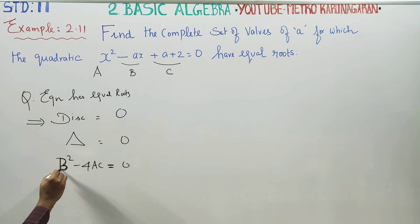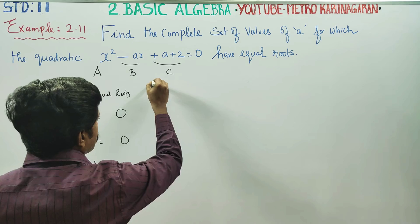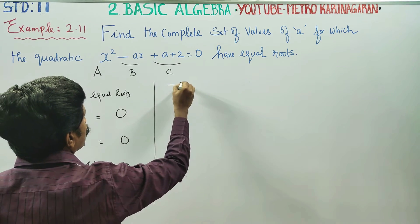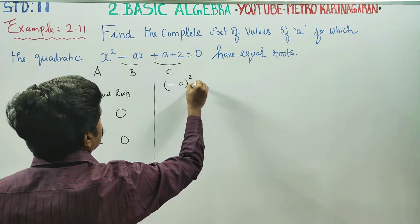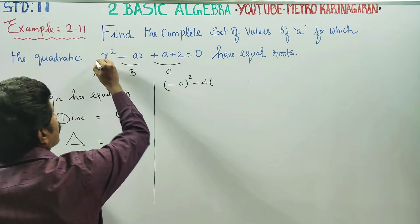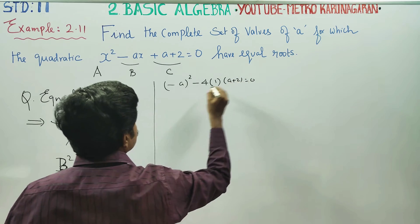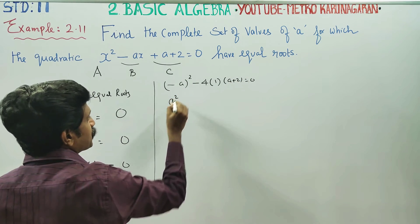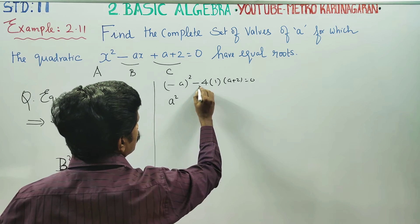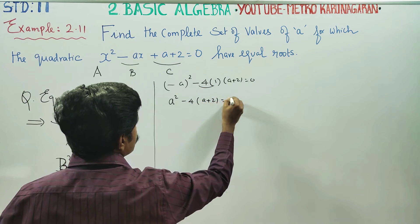We shall start B square. What is my B? Minus A. Minus A whole square. Minus 4 into A into C. 4 into A is 1, and C is A plus 2 equal to 0. Minus A squared becomes plus A squared. Minus 4 into 1 is minus 4 into A plus 2 equal to 0.